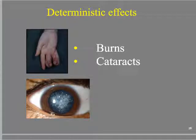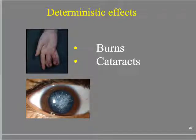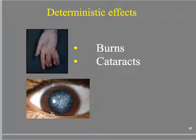When thinking about effects on future generations and on the individual, we have two different ways to think about radiation's effects on the body. The first is a deterministic effect — the effect is determined by the dose amount. The more the dose, the more the effect. These are things like burns and cataracts. There's a threshold, and beyond that threshold we would expect to start seeing those effects.